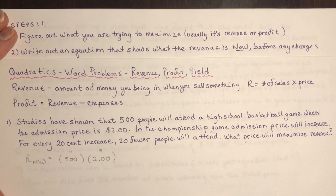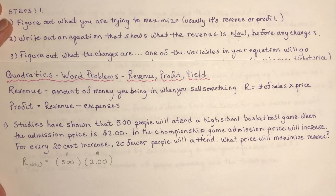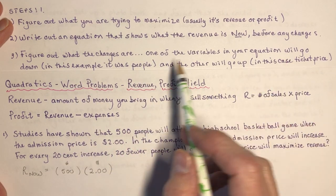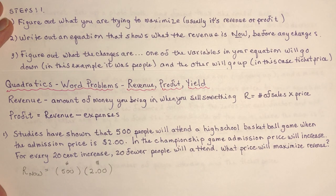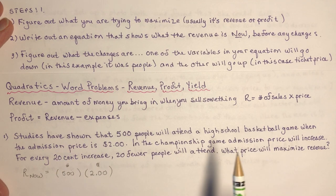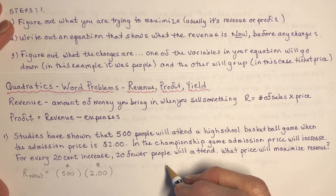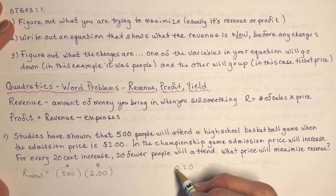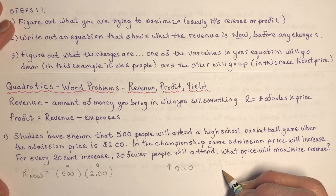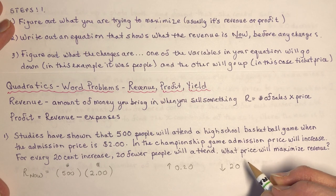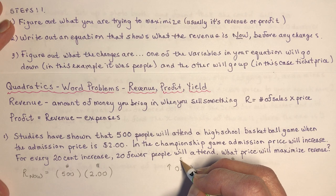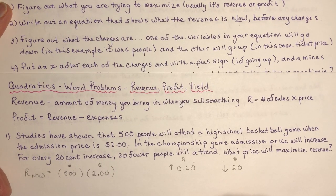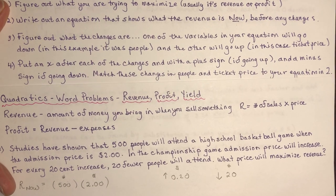The next step is to figure out what the changes are. One of the variables in your equation will go up or down. In this example the people go down when the price goes up — fewer people will go to the game when you raise the price. So there's a 20 cent increase, $0.20, going up, and 20 fewer people will go down. Together, number of people multiplied by money gives revenue. You'll put an X after each change, with a plus sign if going up and a minus sign if going down.